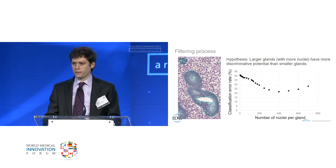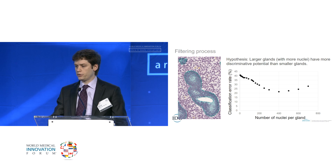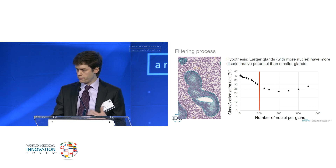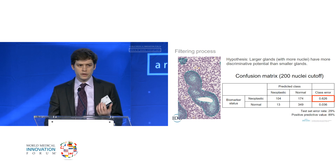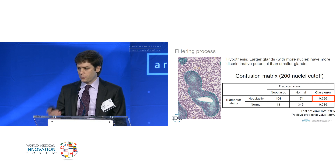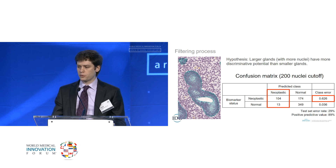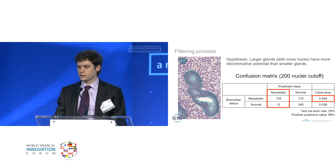We used number of nuclei as a proxy for gland size. With a cutoff of 200 nuclei — excluding every gland with fewer than 200 nuclei — our error rate came down to just under 30%, at 29%, and our classification error of neoplastic glands improved significantly, with an error rate of about 63%. Importantly, our algorithm had a very good positive predictive value of 89%, meaning if our algorithm predicted a gland to be neoplastic, there was about a 90% chance that gland was actually neoplastic.